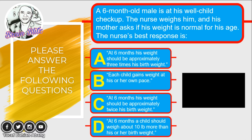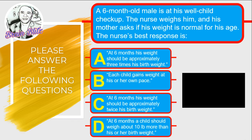Question four: A six-month-old male is at his well-child clinic checkup and the mother asks if his weight is normal. The nurse's best response is — C: at six months, his weight should be approximately twice his birth weight. As mentioned earlier, a child's weight doubles at five to six months, triples at one year, and quadruples at two to two and a half years. The best answer is letter C.